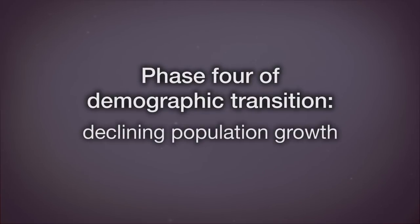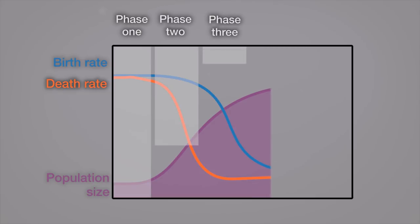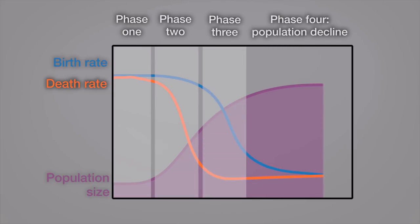And then in phase four, you have declining population growth. Associated with relatively high levels of affluence and economic development, there are fewer young people, higher proportion of elderly people.